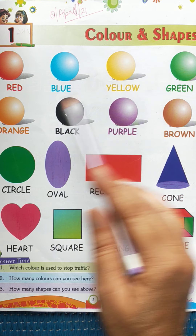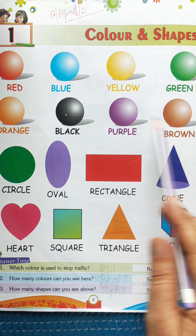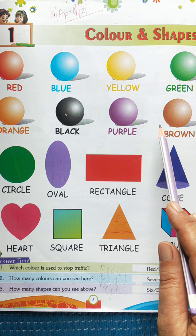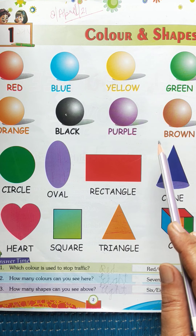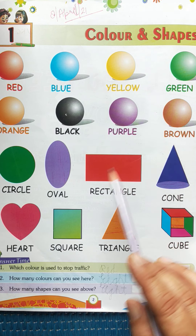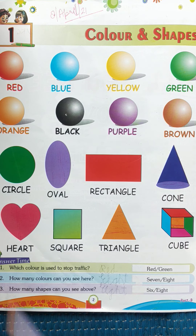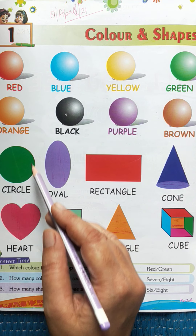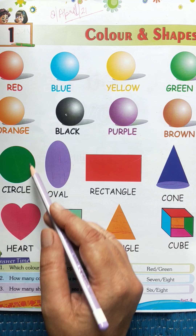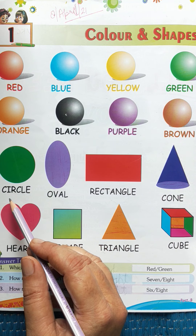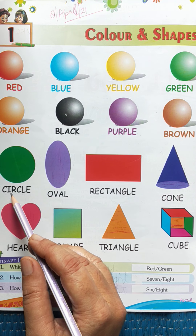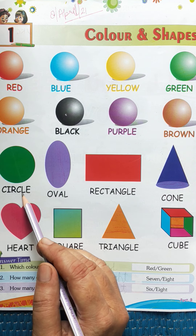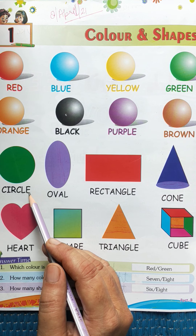These are some color names and their spellings. Now we will learn about shapes. This is the circle shape, and this is the spelling: C-I-R-C-L-E, circle.